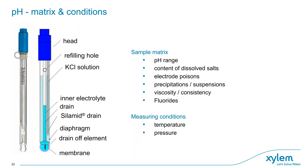When you want a good measurement, consider: the pH range you want to measure, the content of dissolved solids, extremely high or low ion concentrations, electrode poisons, precipitations or suspensions, the viscosity of the sample, and measuring conditions like temperature and pressure. Inside the electrode are many functioning parts — it looks just like a stick but has a lot going on inside to produce a good measurement.